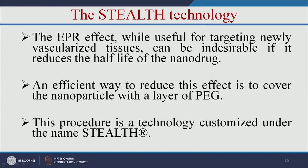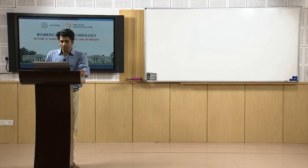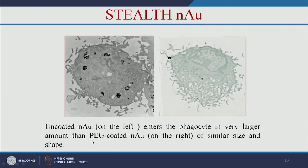Another technology is stealth technology. When using the EPR effect, the main problem is the immune system attacking the nanoparticles. To protect the nanoparticle from immune response, we add a polymer — polyethylene glycol (PEG). This technology is called stealth technology. PEG is used because it is FDA approved, water soluble, produces low or no immune response, and is highly biocompatible.